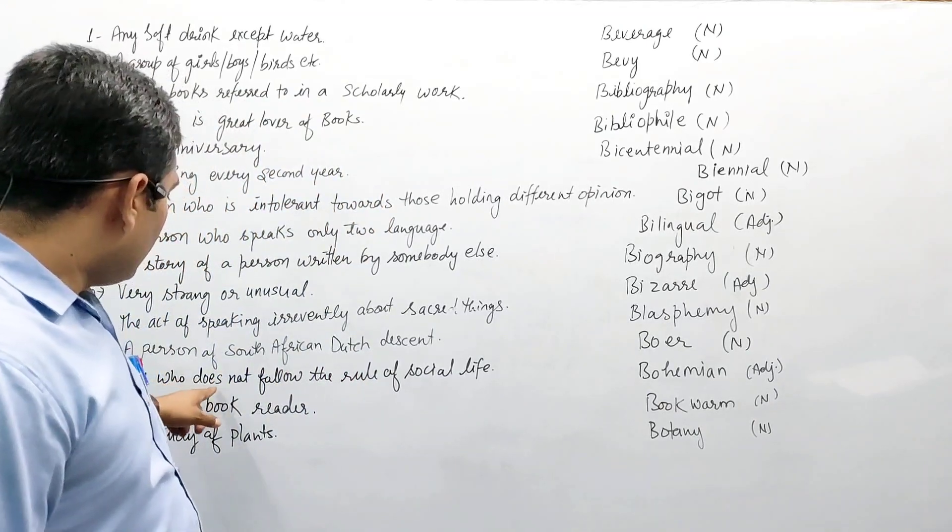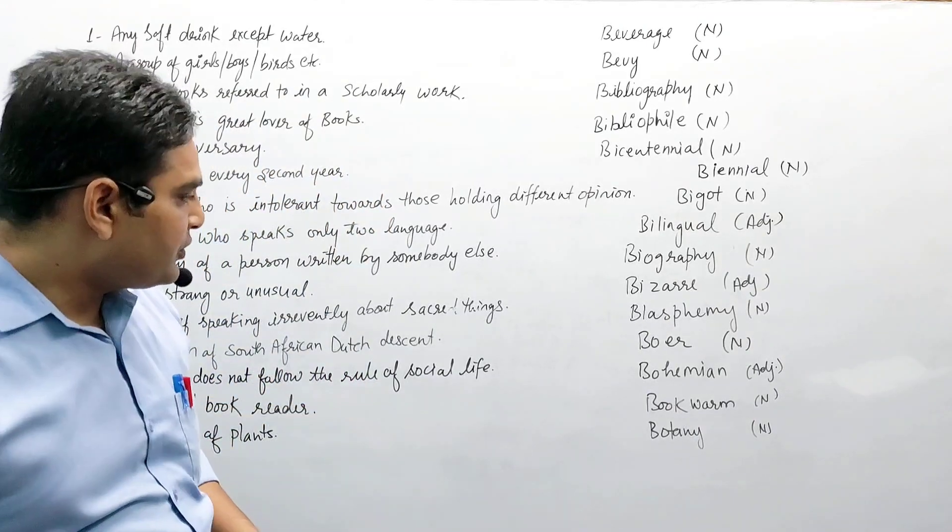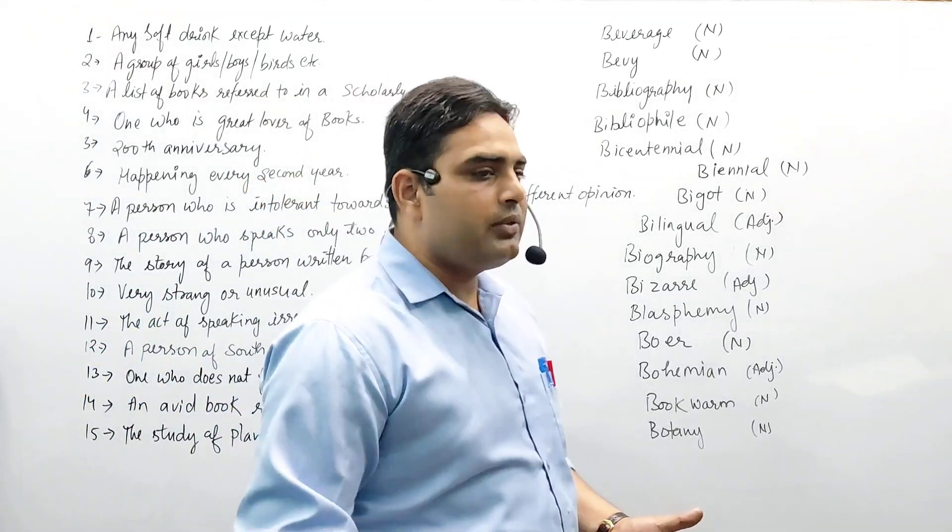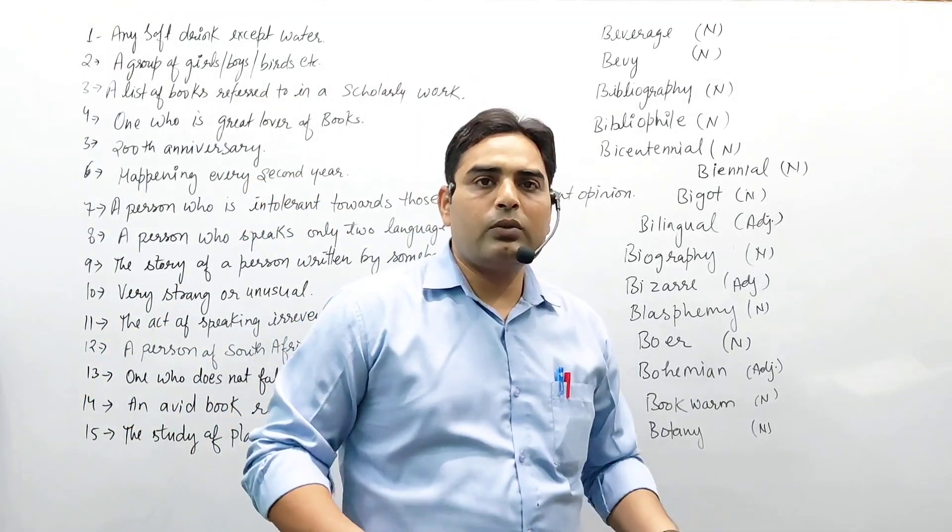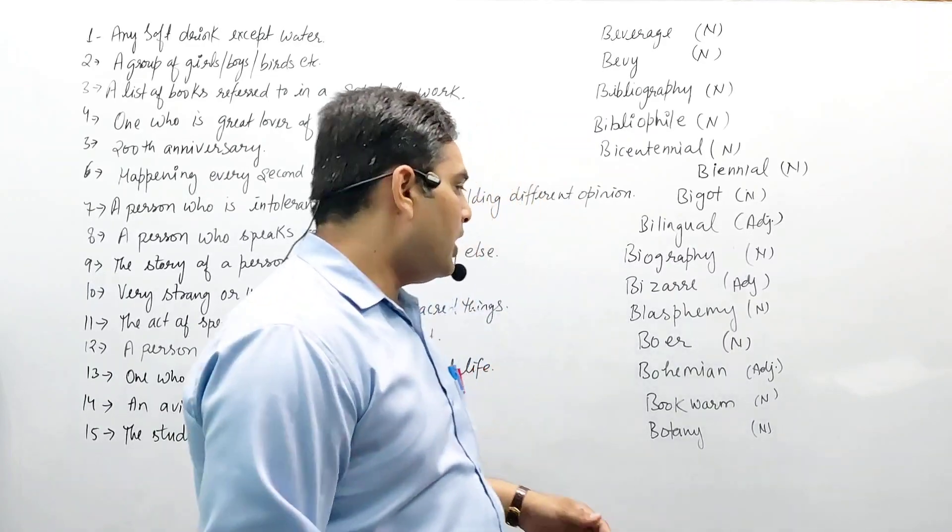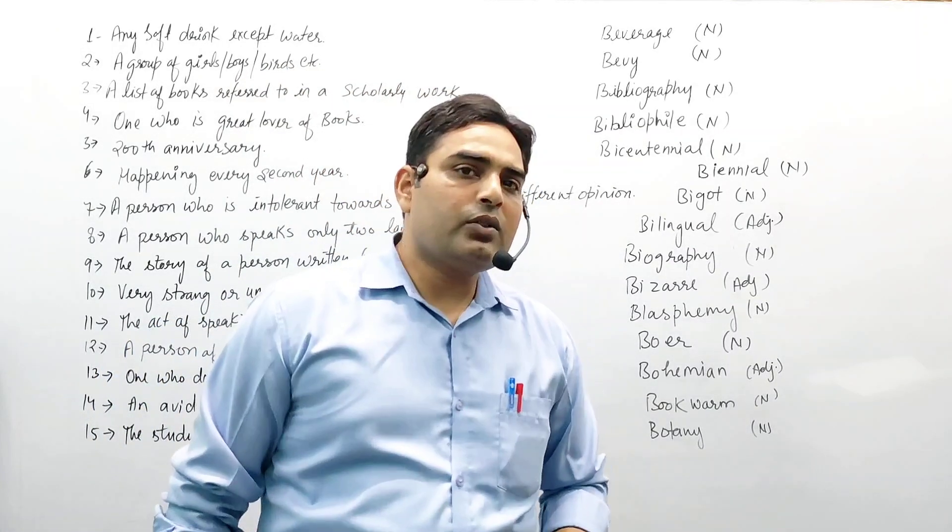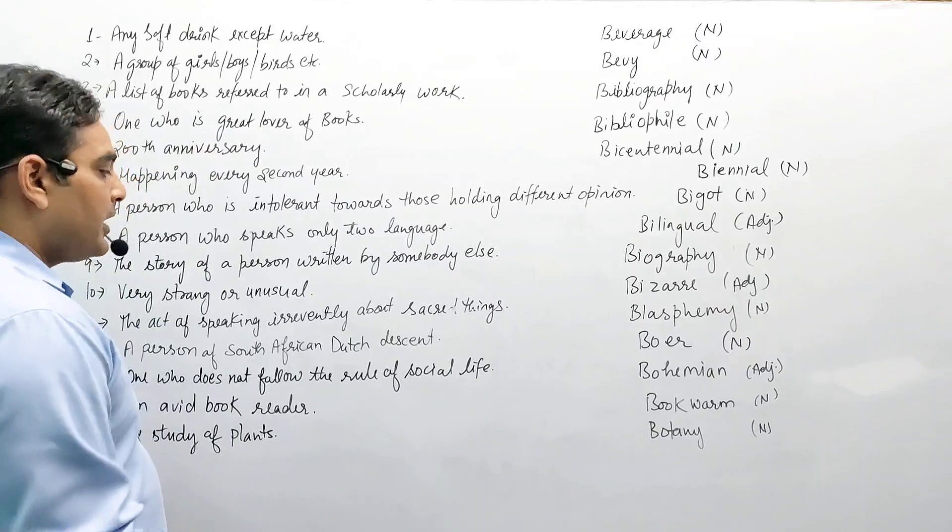Next, one who does not follow the rules of social life. The rules and regulations of social life that they do not follow, it is called bohemian. This is also your adjective.